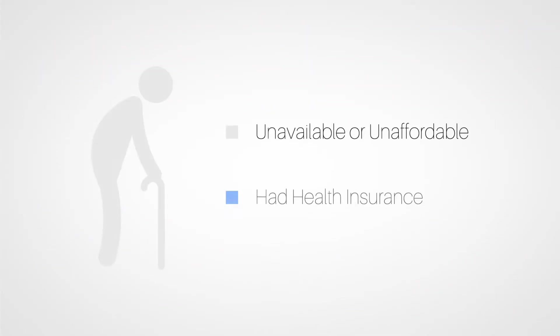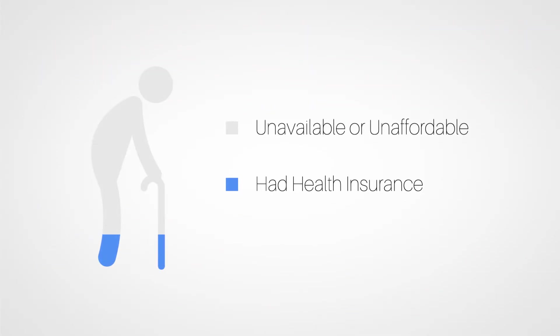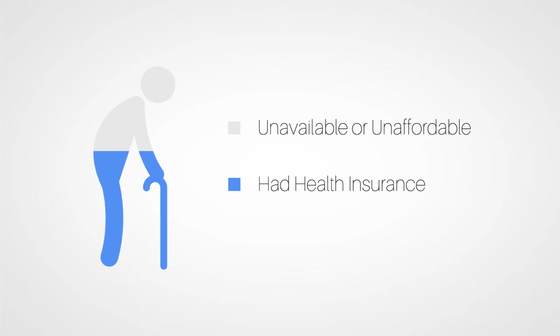Prior to the creation of Medicare, only half of the older adults in America had health insurance. Coverage for the other half was either completely unavailable or simply unaffordable. At the time, older adults paid nearly three times as much for health insurance.